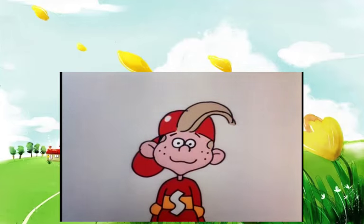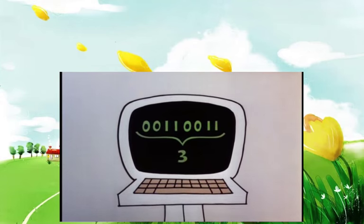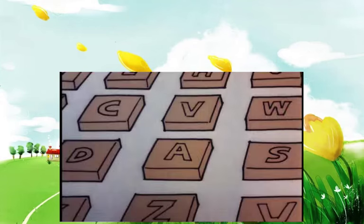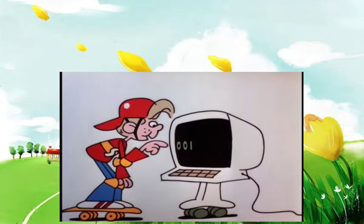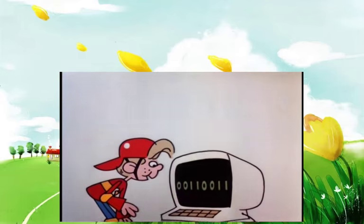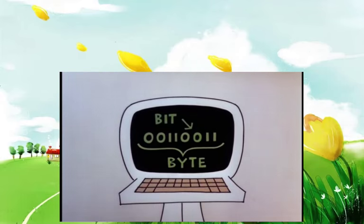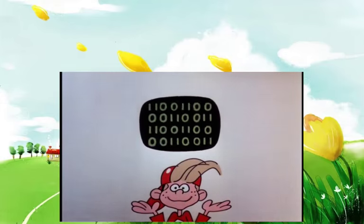Bits? Bytes? Think of you, Scooter. A byte is several digits all standing in a row that represent a letter or a number that you know. For instance, when you write an A, this byte is what I see: 00110011. This is my way of saying three. A bit is one little bit of a byte. I get it — bits and bytes are sort of a computer alphabet.